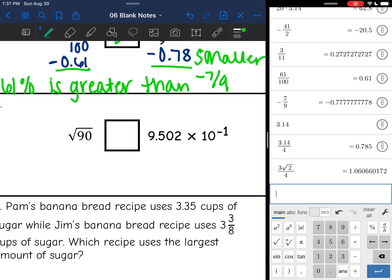I need to convert both of these. The square root of 90 is 9.49. That's what that would round to. And then negative 1 means I'm going to move my decimal backwards 1. So I'd get 0.9502.